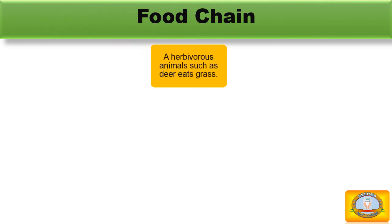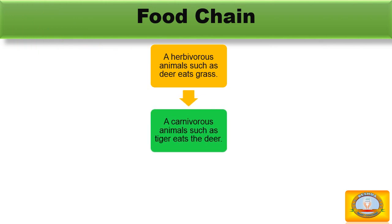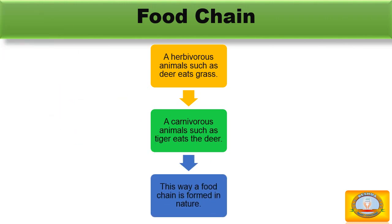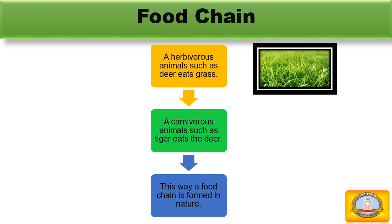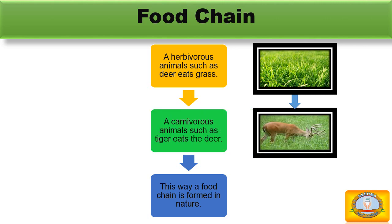A herbivorous animal such as a deer eats grass. A carnivorous animal such as a tiger eats the deer. This way a food chain is formed in nature. This also shows that all animals depend on plants for their food directly or indirectly.